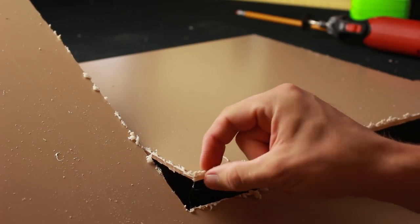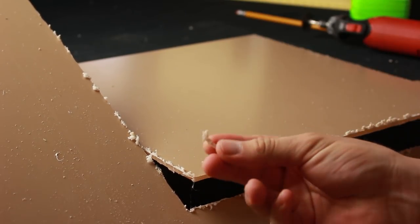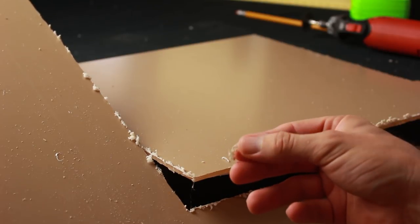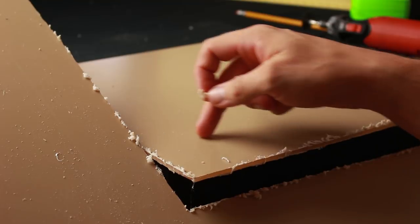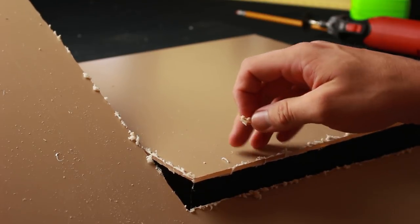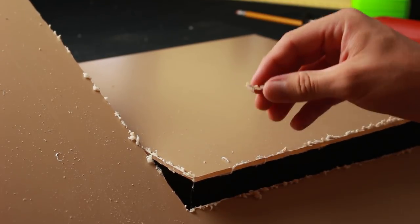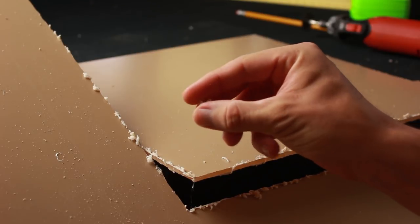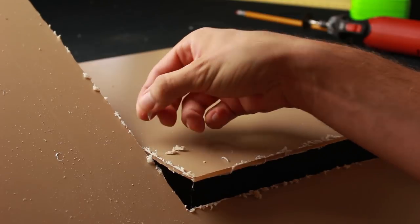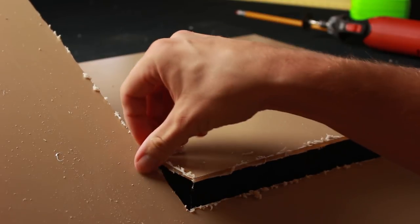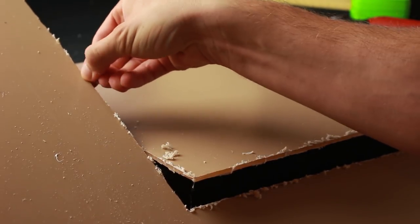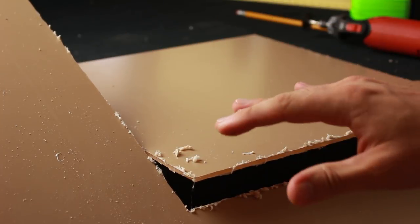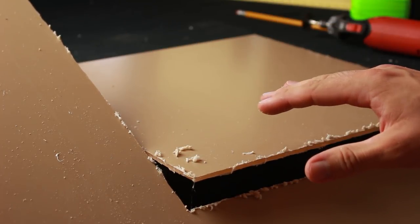For those of you that are wondering what this stuff is that's coming off, when the blade is spinning it gets really hot and the brown cover that goes over the acrylic will actually start to gum up. It melts it and it starts to gum up into this stuff. It starts out soft, but as soon as it cools down it becomes this hardened plastic again.